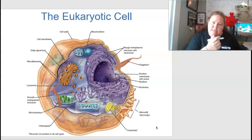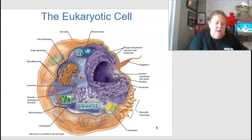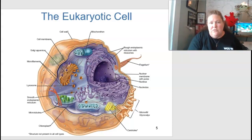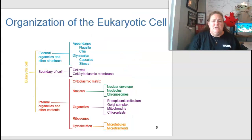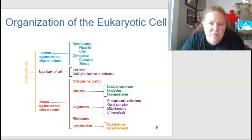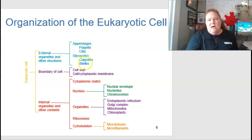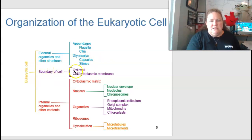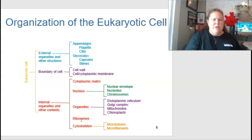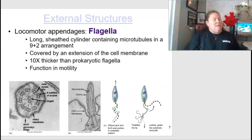Here is a picture of the eukaryotic cell. The nucleus is encased in a nuclear envelope, and we have organelles — little specialized organs — that are subspecialized for different functions throughout the cell. The organization includes external structures such as appendages like flagella and cilia, the glycocalyx, boundaries like the cell wall and membrane, and internal organelles.